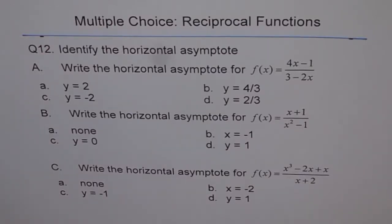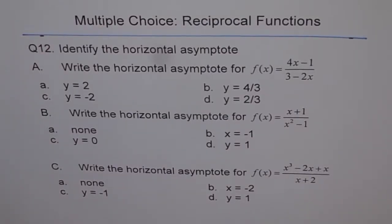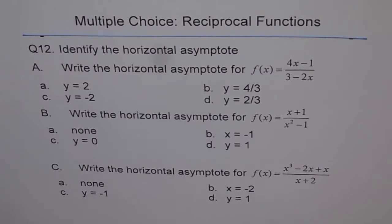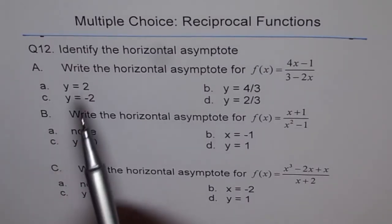Multiple choice questions on reciprocal functions. Question 12: identify the horizontal asymptotes. I have three questions here to consider, all three different cases of horizontal asymptotes. The idea is to teach you the concepts as we go along with similar questions which are asked many times in the test papers.